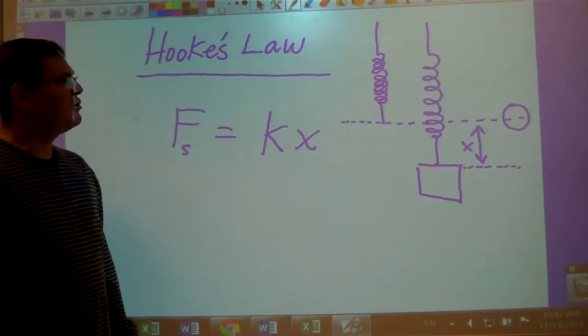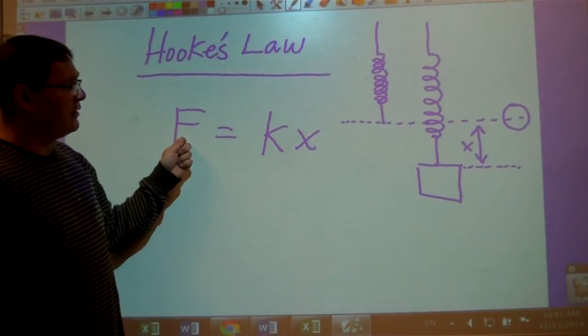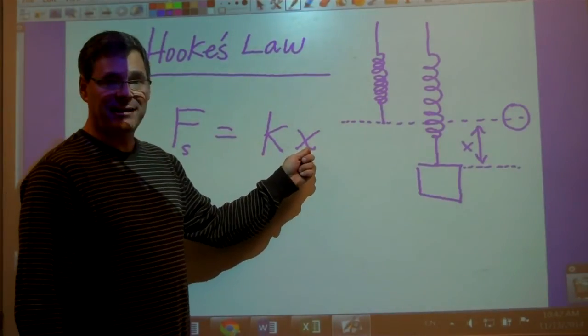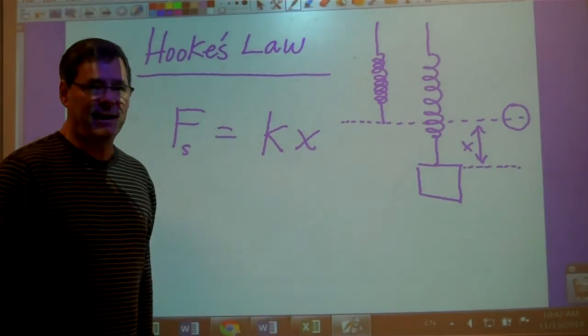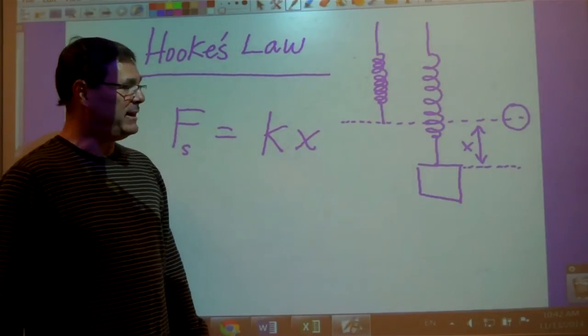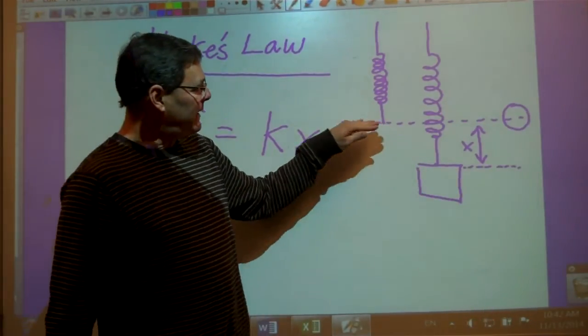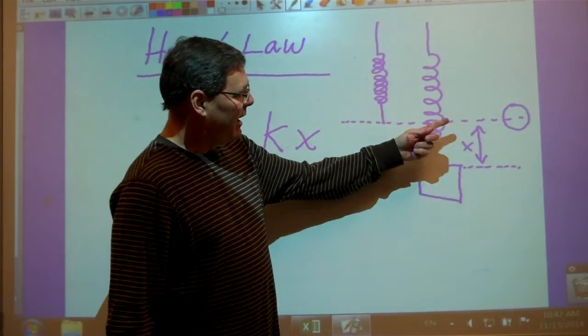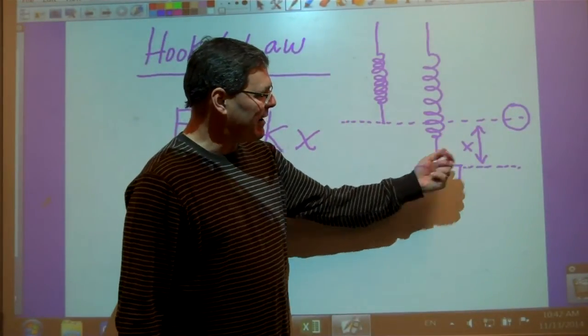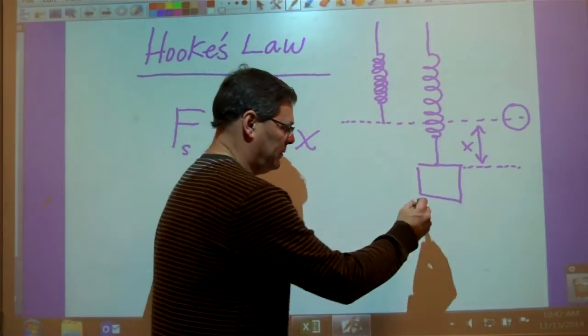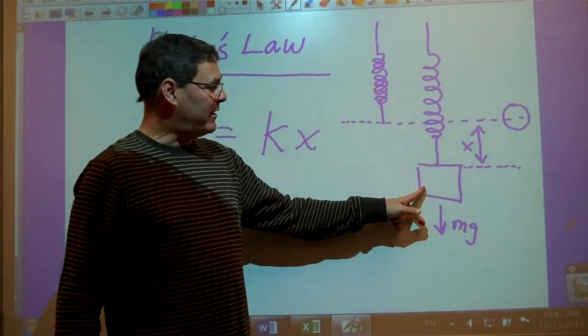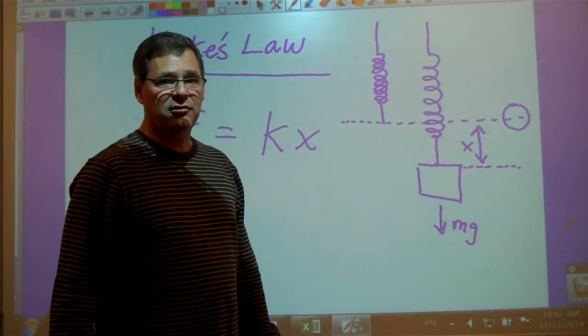So this leads us to Hooke's law, that says the force that stretches a spring is proportional to the amount that the spring is stretched. And we showed that that relationship is a linear relationship. So if I let this be my zero point, where the spring is unstretched, I put a weight on it and it stretched some amount x. And the weight of that mass is the force that stretched the spring.